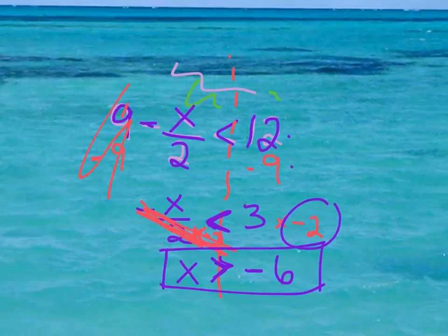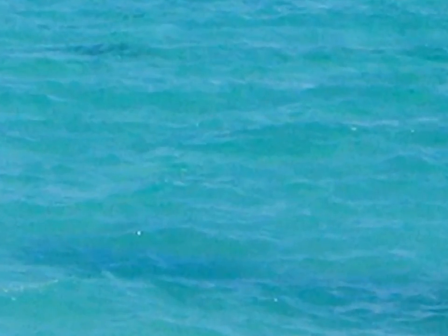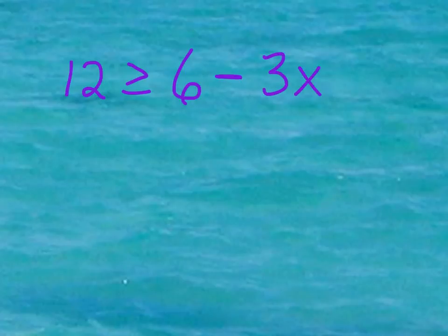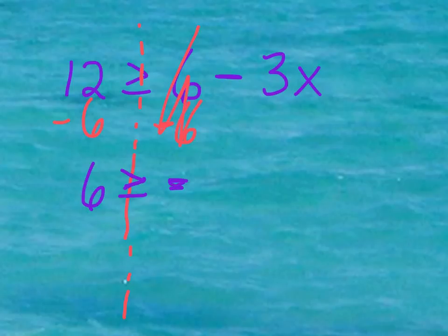Let's go ahead and try one more problem. How about 12 is greater than or equal to 6 minus 3x. So, this time we've got our variable on the right side of the inequality. So, we need to keep that in mind. If we're wanting to get x by itself, first we need to get rid of the 6. So, I'm going to minus 6 on both sides. Cancelling that out. On the left side, we've got 12 minus 6, which is 6. Our inequality symbol is still the same, because we have not multiplied or divided by a negative number yet.